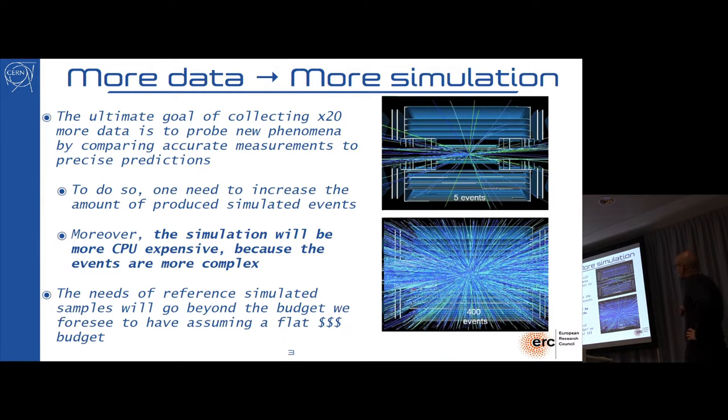The problem is that we get more data, it's already going to be challenged to reconstruct them, but once you reconstruct them you're going to do your precision analysis. The ultimate goal of collecting basically 20 times the data we have so far is to probe new phenomena comparing accurate measurements to predictions that match this precision, and this prediction uses a lot of Monte Carlo simulation.